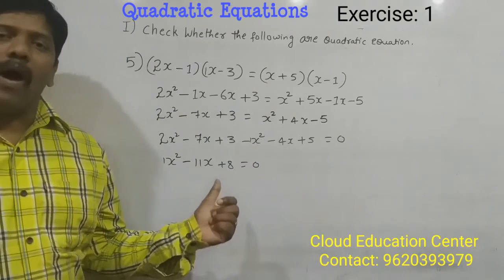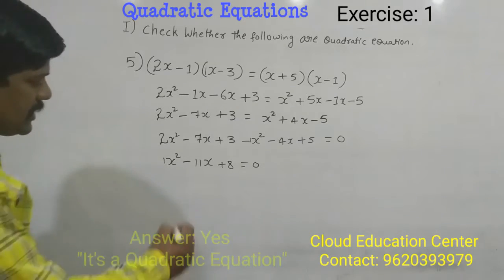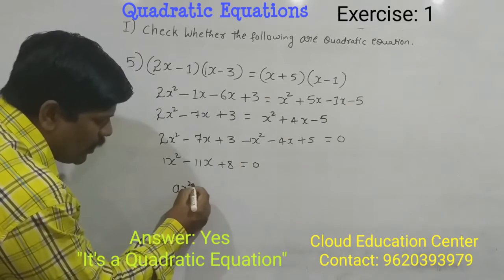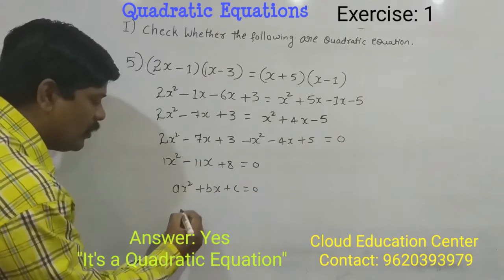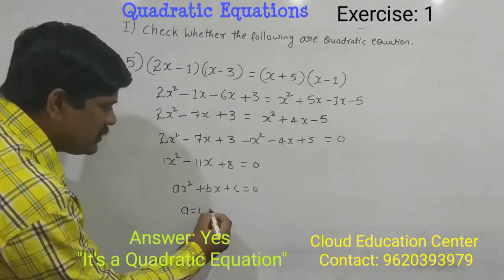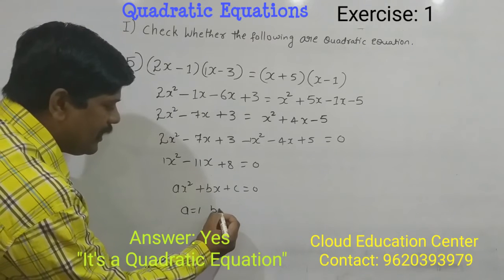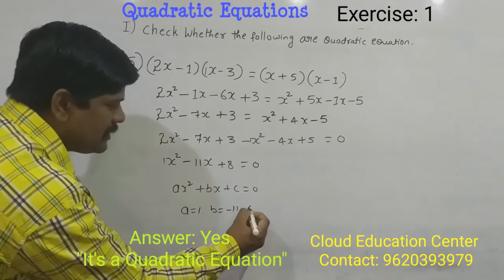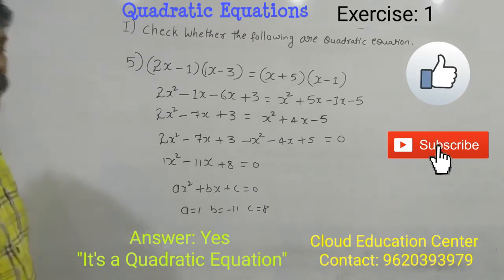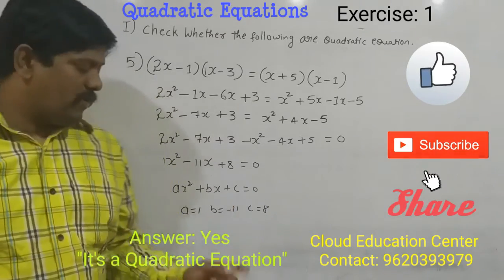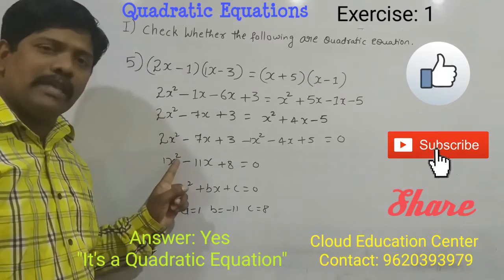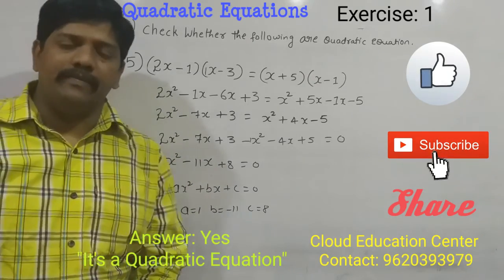So it is in the form of quadratic equation because it is in the form of ax square plus bx plus c is equal to 0. Here a is equal to 1, and b is equal to minus 11, c is equal to 8. Hence it is a quadratic equation. So whenever the form of 2 is there, square is there, then it is a quadratic equation. Thank you.